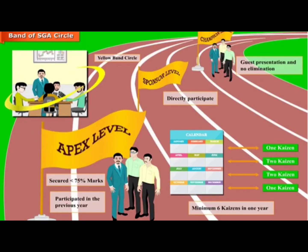SGA circles that participated in the previous year's apex level competition but secured less than 75% marks are called yellow band circles. These can directly participate at the sponsor level competition for the succeeding year, subjected to completing a minimum of one Kaizen every quarter and a minimum of six Kaizens in the year. Yellow band circles must have a guest presentation at champion level for sharing best practices; however, their performance will not lead to elimination at the champion level.